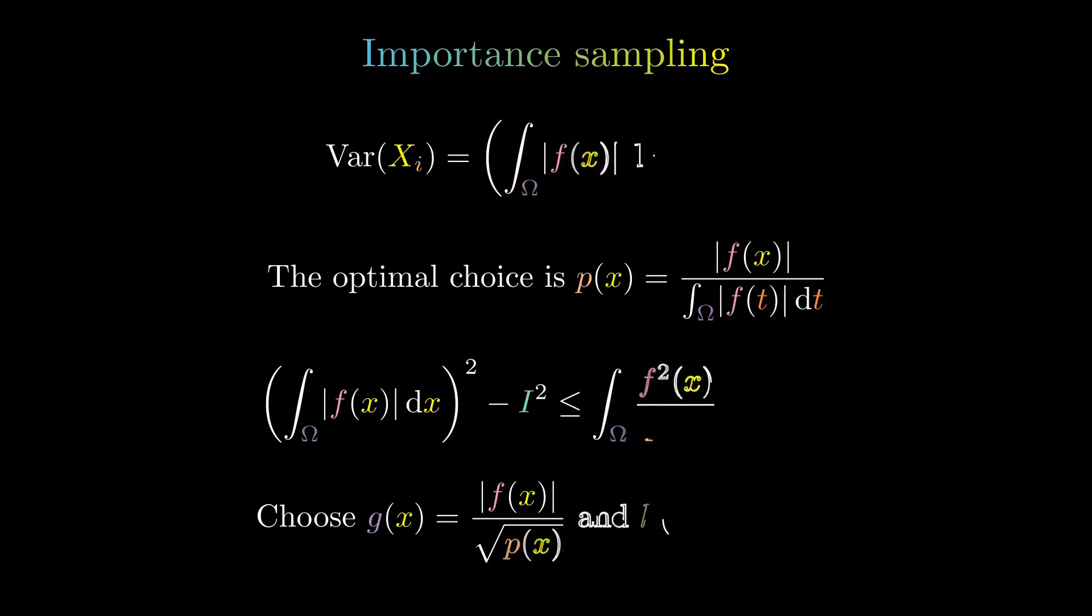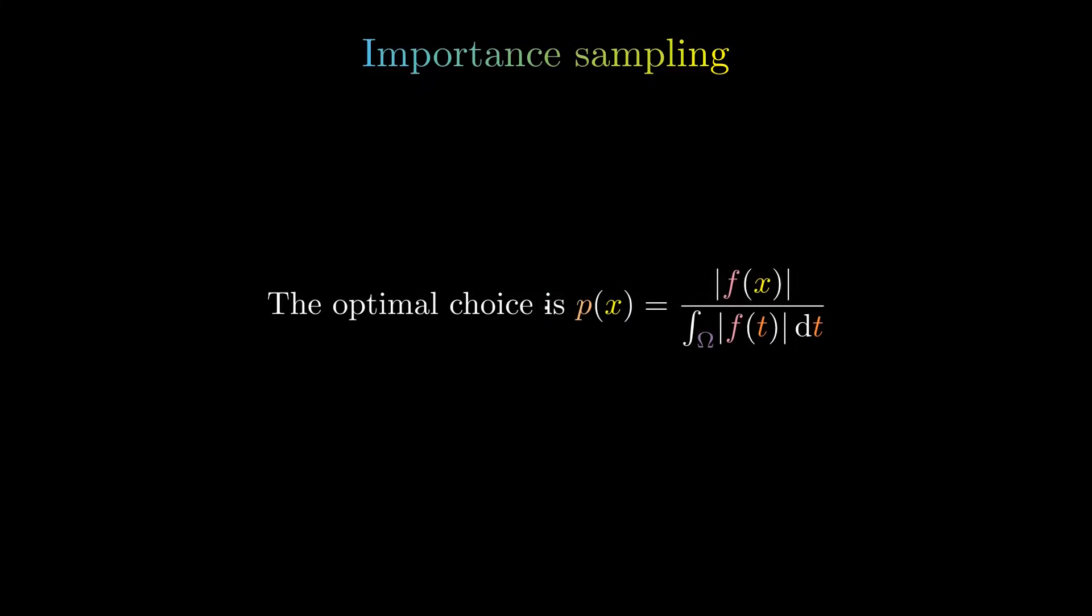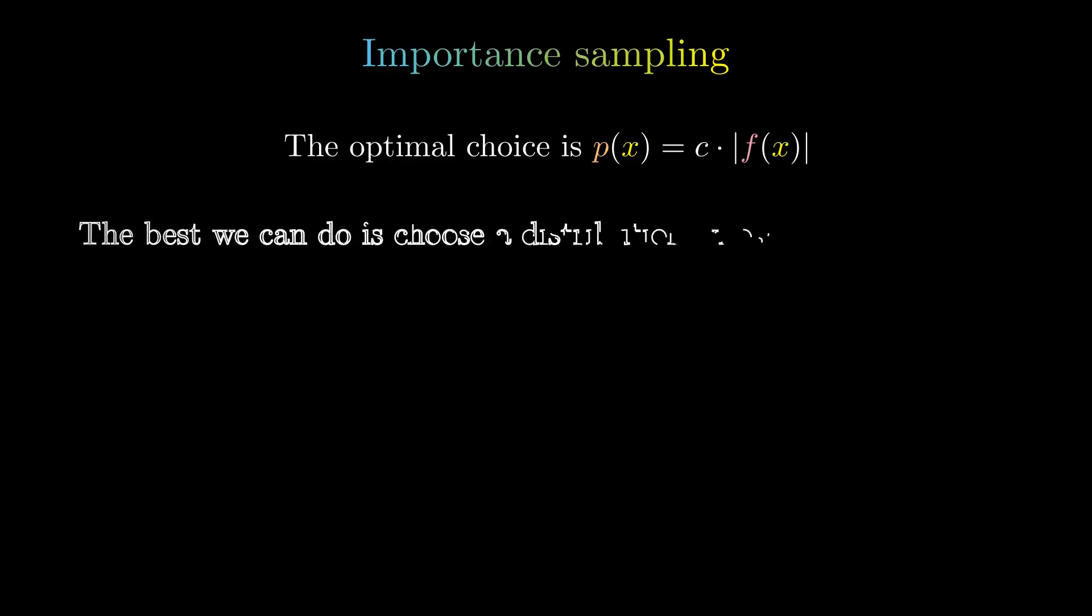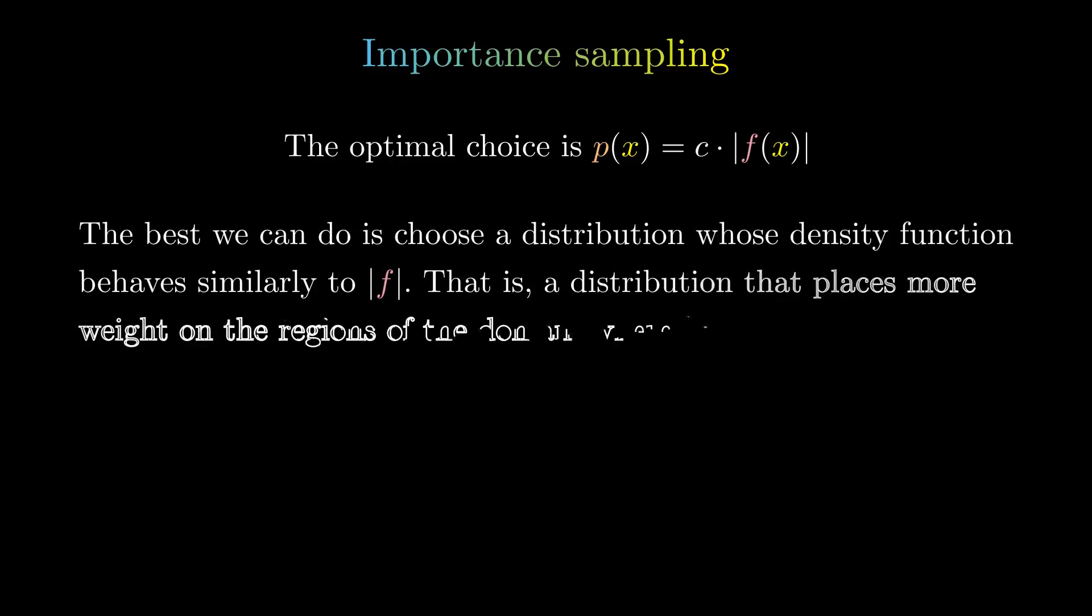How does this help us in finding a good P? Observe that the optimal choice is just a normalizing constant times the absolute value of F. The best we can do is choose a distribution whose density function behaves similarly to the absolute value of F.